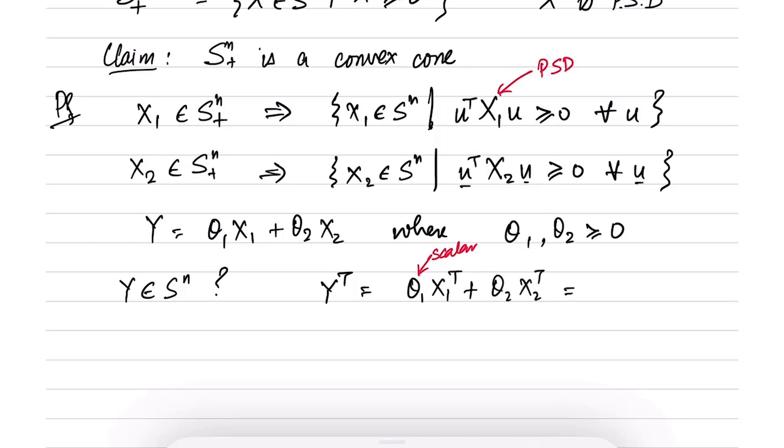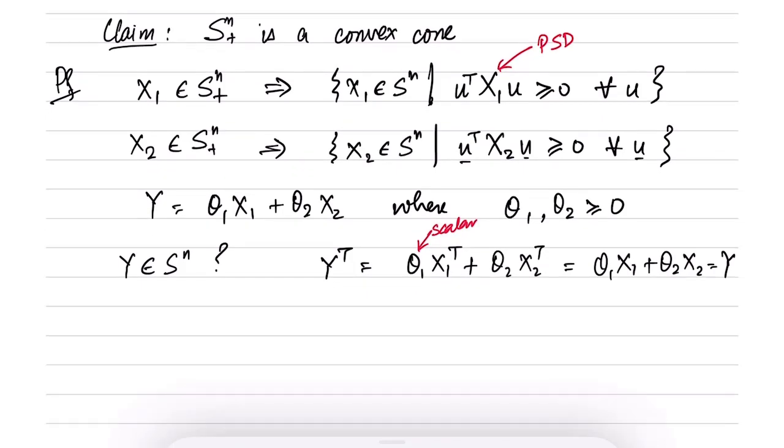which is exactly equal to theta1 times X1 plus theta2 times X2, which is Y. So Y is indeed symmetric because X1, X2 are both symmetric.